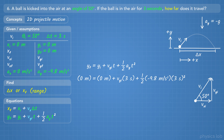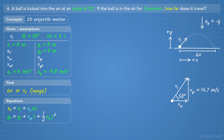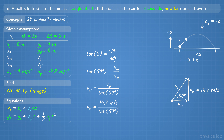We plug in the values that we know, and the only unknown is the initial y velocity. If we simplify and rearrange that equation, we get 14.7 meters per second for the initial y velocity. Now we can use that to find the x velocity. Tan of theta equals the opposite side divided by the adjacent side, so tan of 50 degrees equals the initial y velocity over the initial x velocity. Rearranging and plugging in 14.7 meters per second, we get 12.33 meters per second for the initial x velocity.